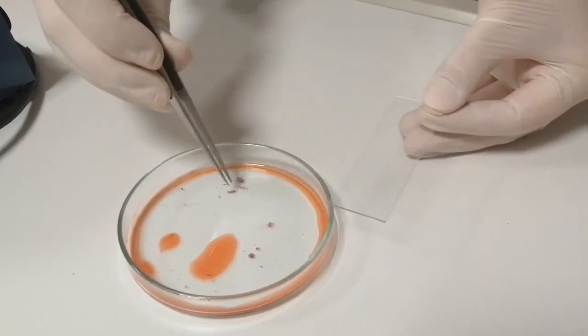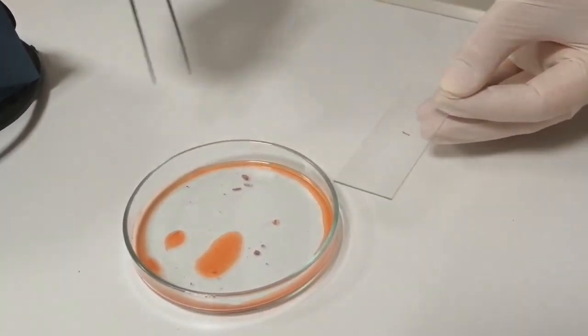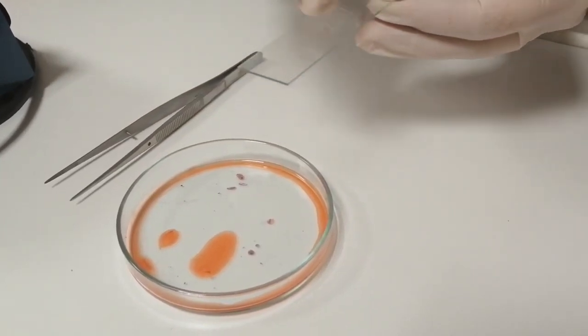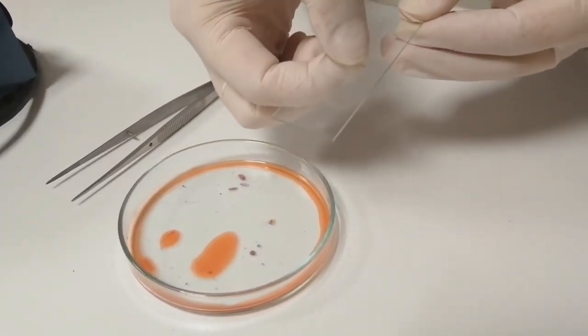Now, we take one of the root tips from the watch glass and place it onto a slide and also a cover slip on the slide.